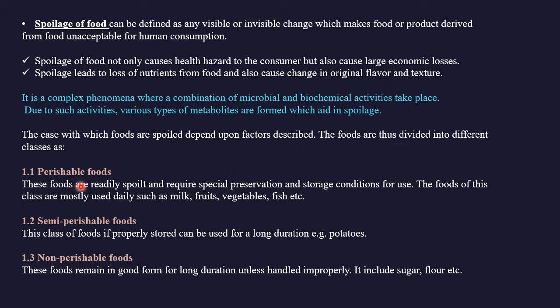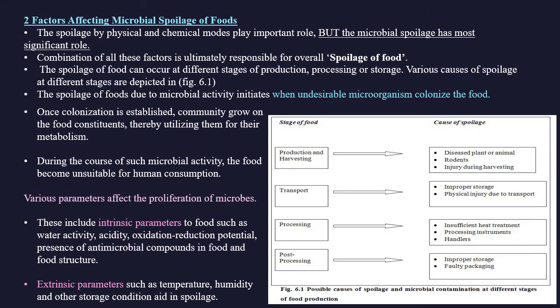The first class is perishable foods — these are readily spoiled and require special preservation and storage conditions. They are mostly used daily, such as milk, fruit, vegetable, and fish. Perishable foods have high water content, which is one reason they spoil faster. The second class is semi-perishable foods — if properly stored they can be used for long durations; example: potatoes. Third is non-perishable foods, which remain in good form for long durations unless handled improperly; examples include sugar and flour.